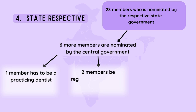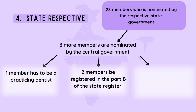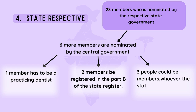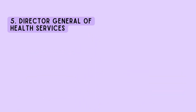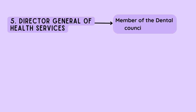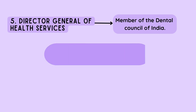Two members out of the six should be registered in Part B of the state register. The remaining three people could be members whoever the central government wants to nominate. Lastly, the Director General of Health Services is also a member of the Dental Council of India.